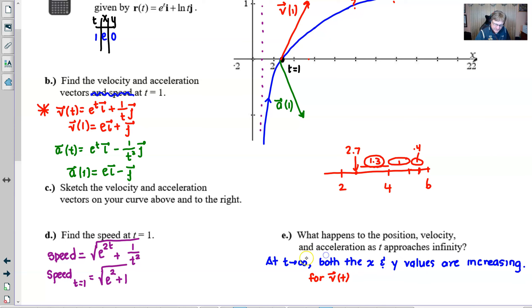I probably should have said in blue for position. I was relying on my color coding. For the position, for r(t), both x and y are increasing. But for v(t), we'll say x is approaching infinity where y is approaching zero.